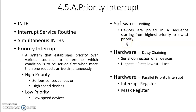Even though the highest priority device did not send any interrupt request, the polling method will go to the highest priority device first, check whether it has sent the request or not, and then continue in the same order. So this method will take more time to reach the actual device that has sent the interrupt request — that is the drawback of the polling method.